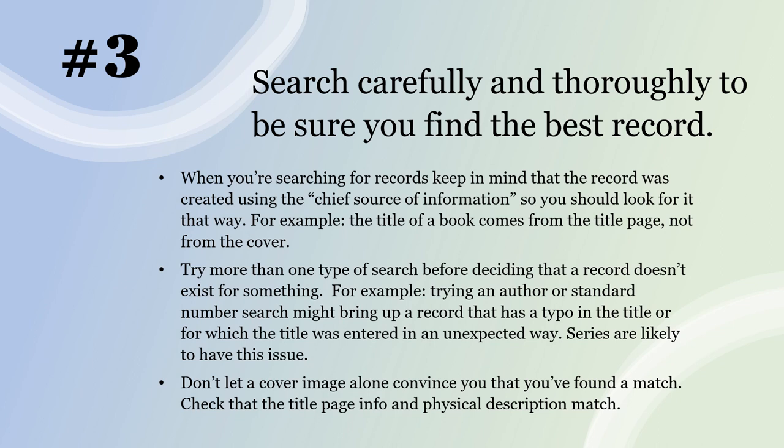Number three: search carefully and thoroughly to be sure you find the best record. The record should always have been created from the chief source of information — for example, the title of a book should be what's on the title page, not what's on the cover. So as you try to match the record to your item in hand, be aware of where the data should have come from. You should probably try more than one type of search before deciding a record doesn't exist or before accepting a record that's not complete.